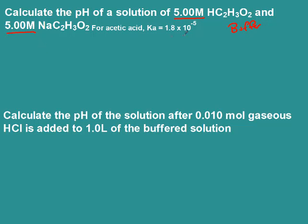Since we have a buffer, we can say that our pKa is equal to 4.74. We can use Henderson-Hasselbalch, so pH equals pKa plus log of base over acid. Our pKa was 4.74, our base concentration is 5, and our acid is 5. So log of one is zero, so pH equals 4.74.